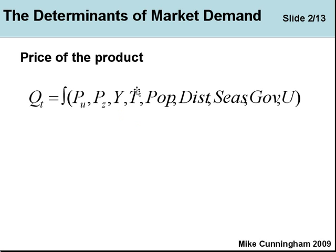T is for tastes — the amount we buy of things depends on how fashionable or how desirable they are, which is a function of advertising and marketing. The amount we buy of a particular commodity might depend on the population — the more people there are in a country, the bigger the demand. It also depends on the distribution of income within the community. If there are only a few rich people and everybody else is absolutely poor, the demand may be very small.